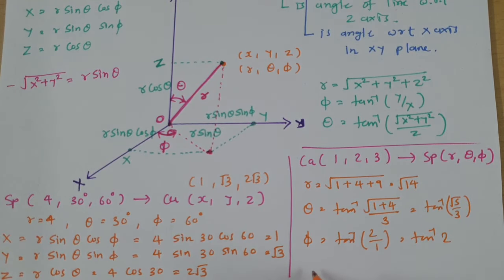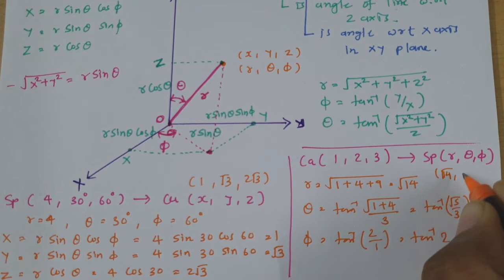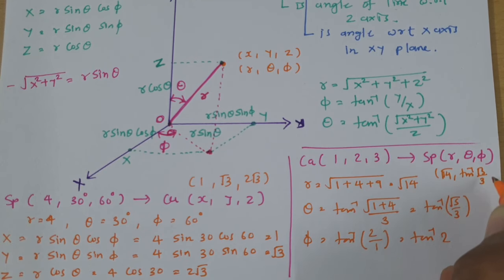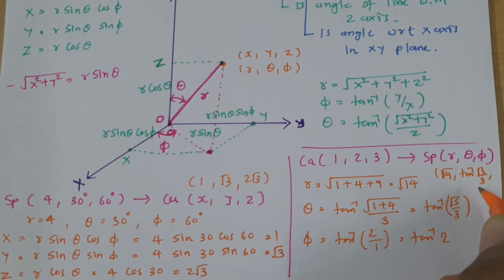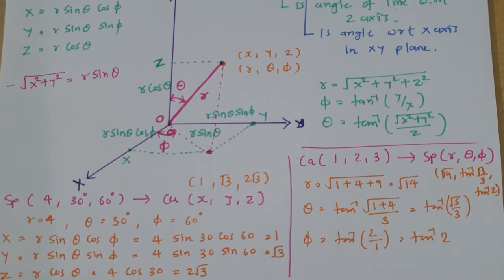And Phi equals tan inverse of Y by X, so Y is 2 and X is 1, giving tan inverse of 2. So the spherical coordinates are: R equals square root of 14, Theta equals tan inverse of root 5 over 3, and Phi equals tan inverse of 2. This is how we can calculate it.